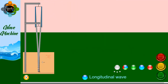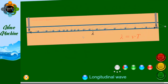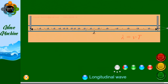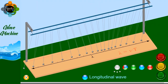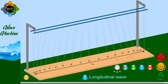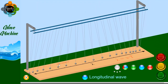You can see all the particles coming closer together and moving away from each other — this is called compression and rarefaction. From the top view, all particles are aligned parallel to the direction of propagation, moving closer and farther apart. The 3D view shows the mean position line and all particles on the same axis, illustrating longitudinal wave motion.